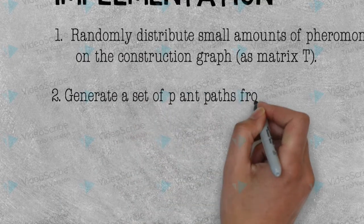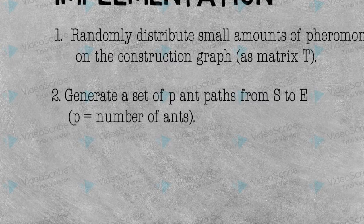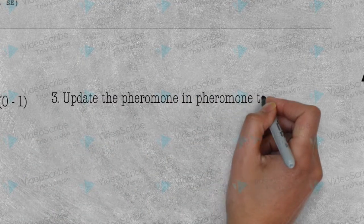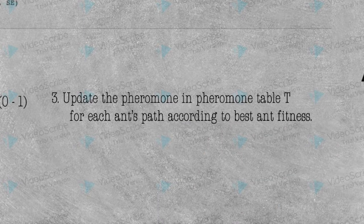Secondly, generate a set of P ant paths from S to E, where P is a variable that represents the number of ants. Thirdly, update the pheromone in the pheromone table T for each ant's path according to best ant fitness.